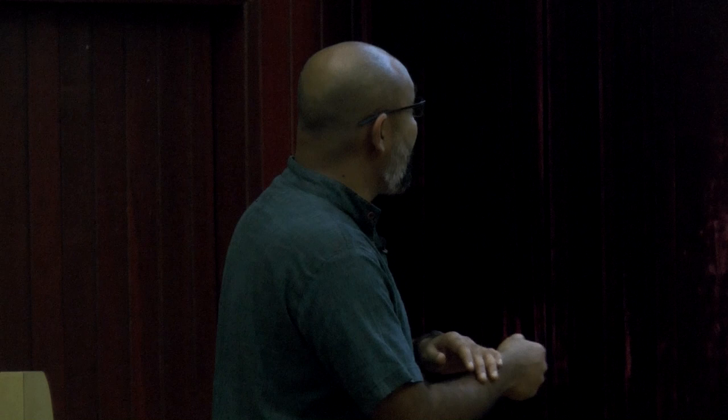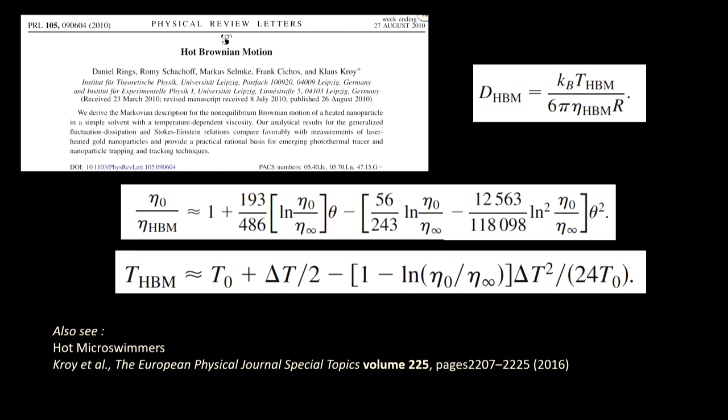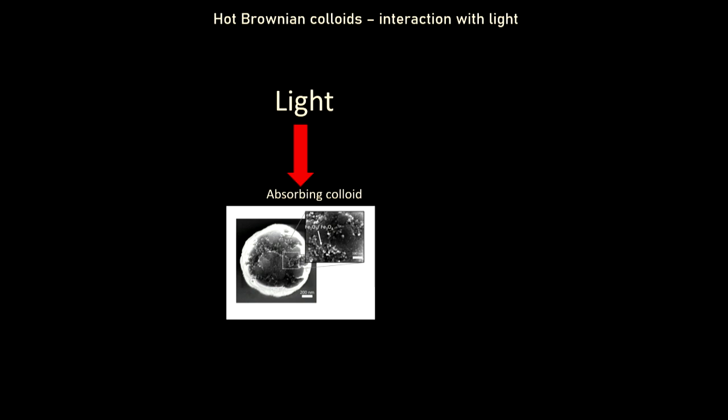There are interesting reviews in the context of micro-swimmers too. This framework is extremely useful for people working on optical trapping because it gives us a framework to understand the interactions in significant detail. If you take hot Brownian colloids and illuminate them — they generally have absorbing agents infused into them — you can see interesting consequences.